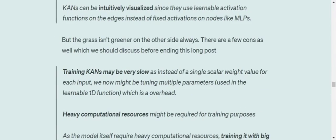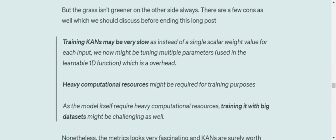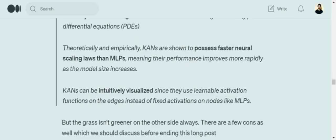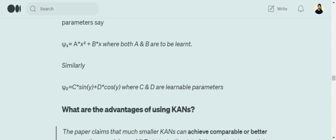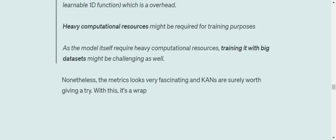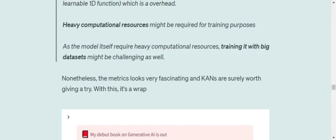Now, grass is not greener on the other side always. There are a few issues as well with KANs as people have pointed out. Training KANs may be very slow because instead of now tuning a single scalar weight for each of the input values, you might be tuning out multiple parameters. As you saw in this particular example, A into X2 plus B into X, now there are two parameters to be trained instead of just one W1 weight. Heavy computational resources are required. And as the model itself requires heavy computational resources, training with big data can be challenging.